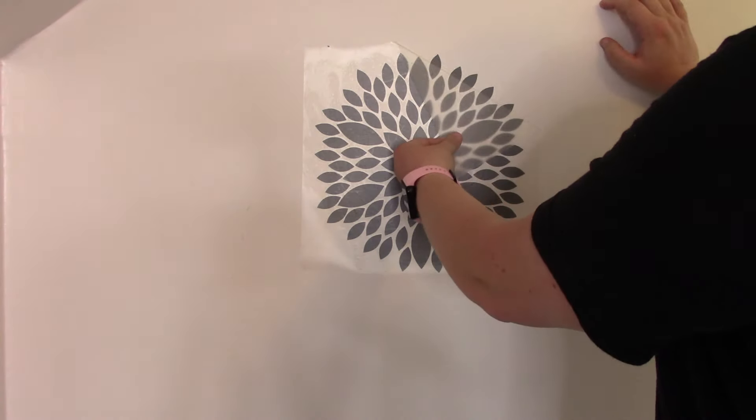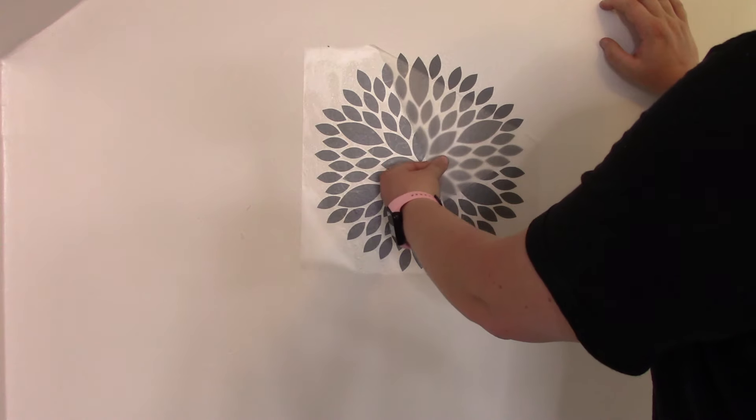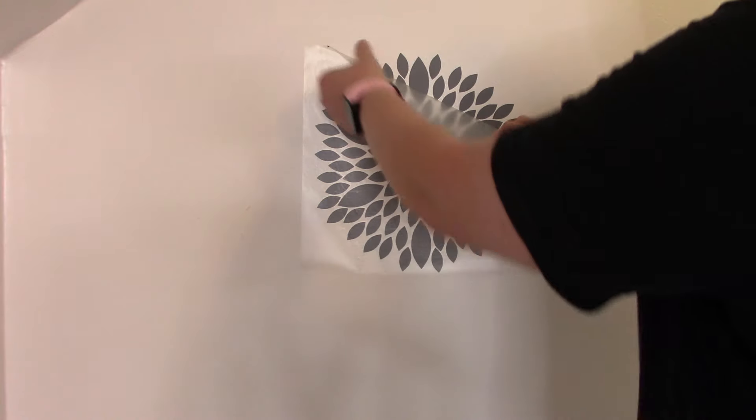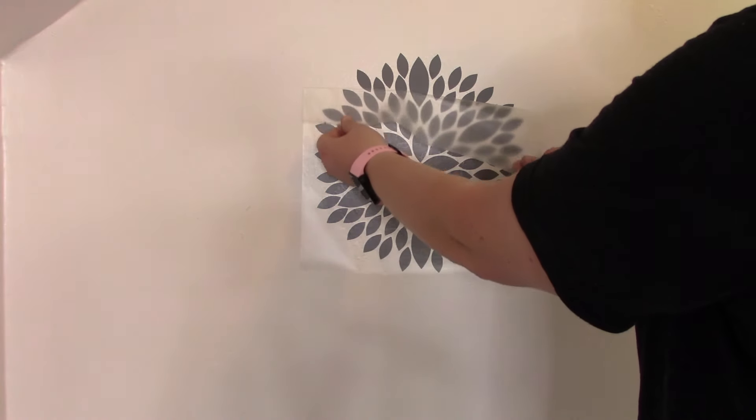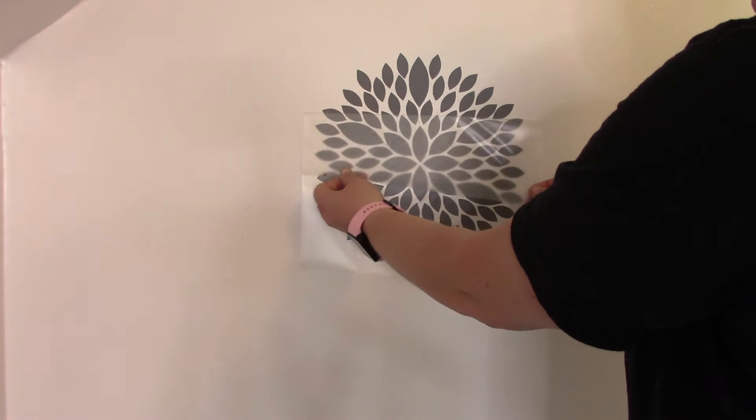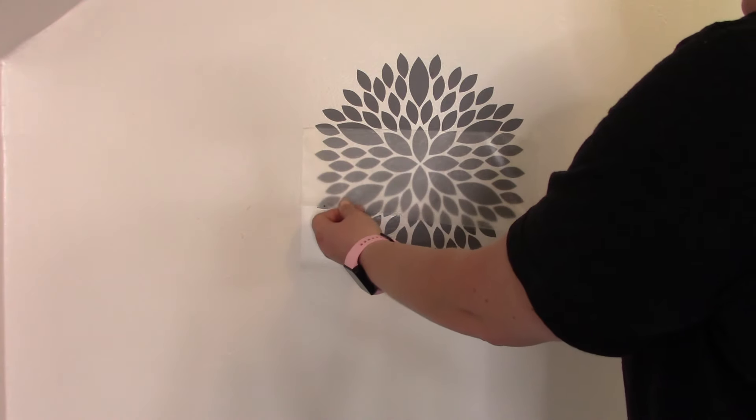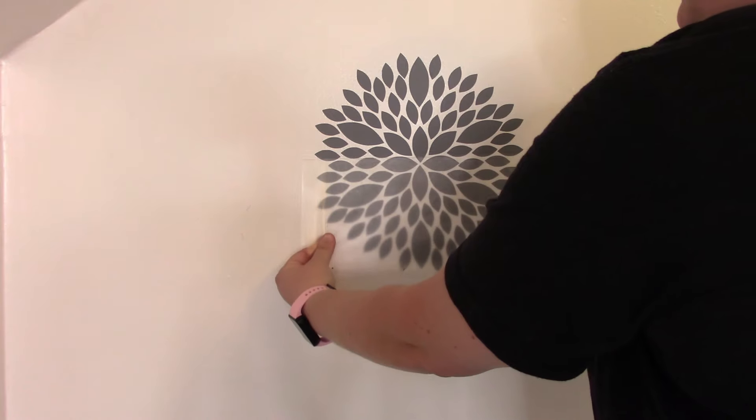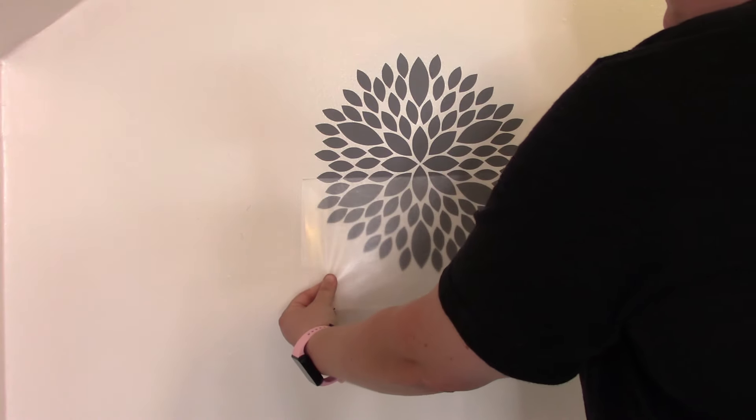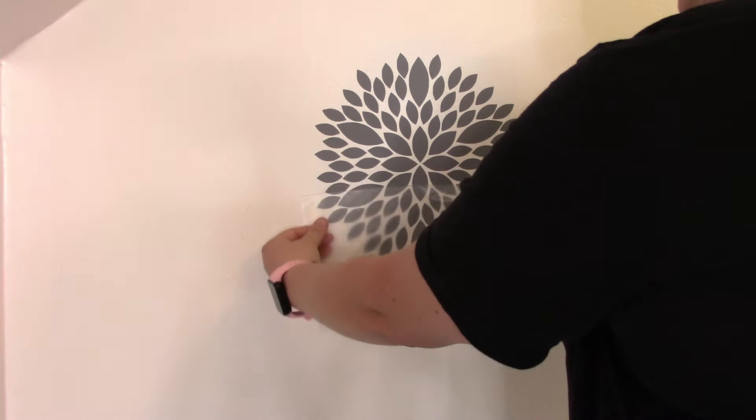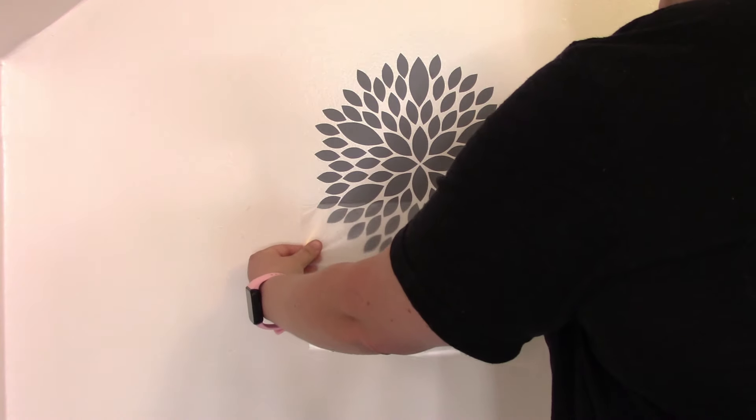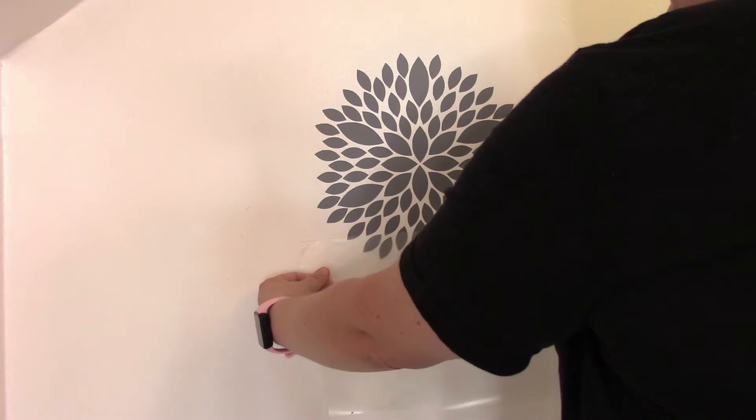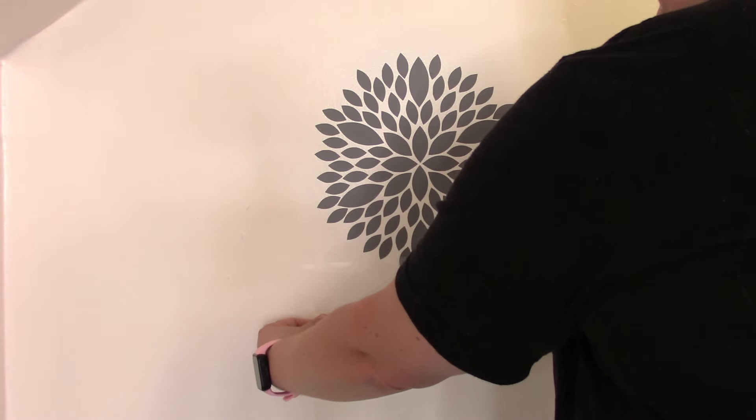Now you want to pull your transfer tape at a nice sharp angle. A couple of my pieces you'll see as I go didn't totally stick, so I had to go back and kind of push them down with my finger and things like that. My wall is just slightly textured but this gray one worked really well. And you just want to go nice and slow. Take your time and don't get frustrated if some of them aren't sticking. You can go back and burnish them down again with either your finger or the ball or even a squeegee.